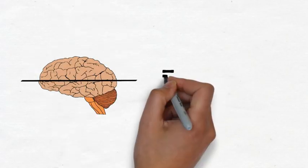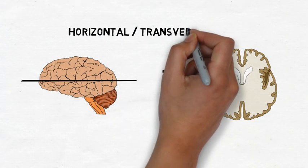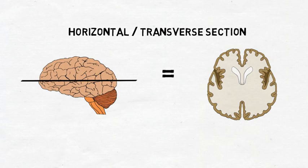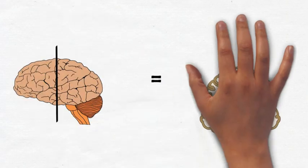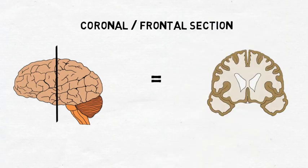A horizontal or transverse section is made by slicing the brain perpendicular to the long axis of the body. A coronal or frontal section is seen when a slice is made parallel to the long axis of the body.